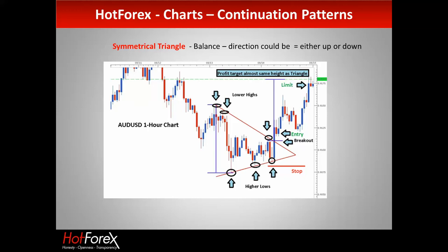With a symmetrical triangle, the target can be much bigger, but the likelihood of it being achieved is less. With the ascending and descending triangles, the targets can be lower but the likelihood of being achieved is higher. The targets are closer. Symmetrical triangles can still be very powerful and easy to spot. Those five rules are the same, and a volume indicator can give additional help as well.